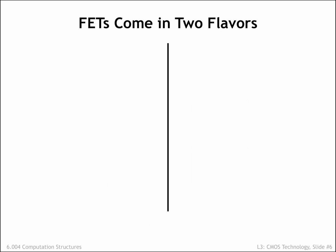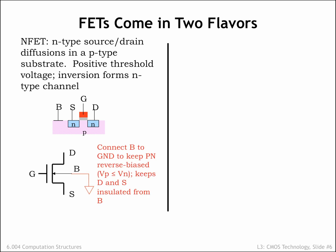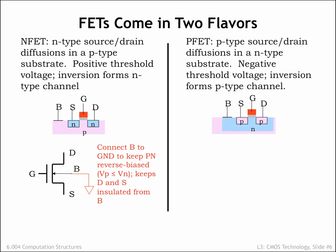Up to now, we've been talking about MOSFETs built with N-type source and drain diffusions in a P-type substrate. These are called N-channel MOSFETs, since the inversion layer, when formed, is an N-type semiconductor. The schematic symbol for an N-channel MOSFET is shown here, with the four terminals arranged as shown. In our MOSFET circuits, we'll connect the bulk terminal of the MOSFET to ground, which will ensure that the voltage of the P-type substrate is always less than or equal to the voltage of the source and drain diffusions.